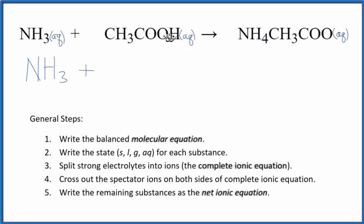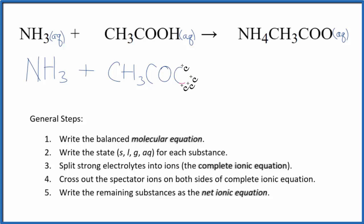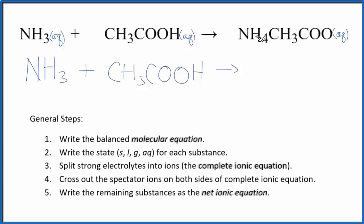Same with acetic acid — this is a weak acid, it's a weak electrolyte. While it does dissociate a little bit, for the purpose of our net ionic equation we don't split acetic acid apart; we just keep CH3COOH. So these are the reactants. In the products we have ammonium acetate. Ammonium compounds are very soluble, as are acetate compounds, so we can split this up into its ions because it's a strong electrolyte.